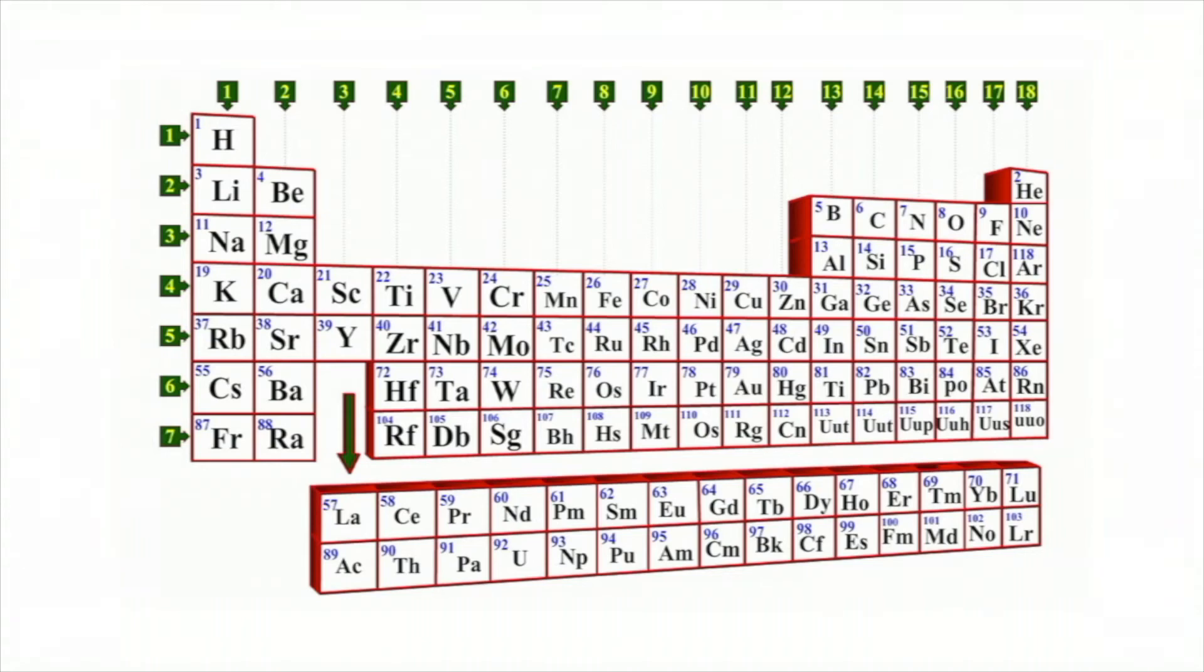You can think of chemistry as all the elements trying to achieve the same number of valence electrons as the noble gases. This tendency is reflected in the periodic table and is why the octet rule is an important principle of chemistry.